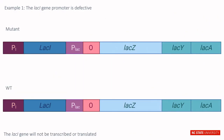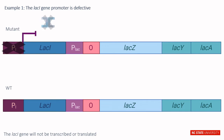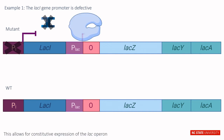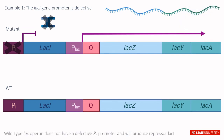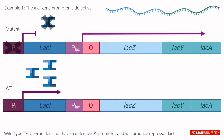In our first example, the lac I gene promoter is defective. This means that the lac I gene will not be transcribed or translated into repressor protein lac I, allowing for constitutive expression of the lac operon. The wild type lac operon, however, does not have a defective promoter and will therefore produce repressor protein lac I.